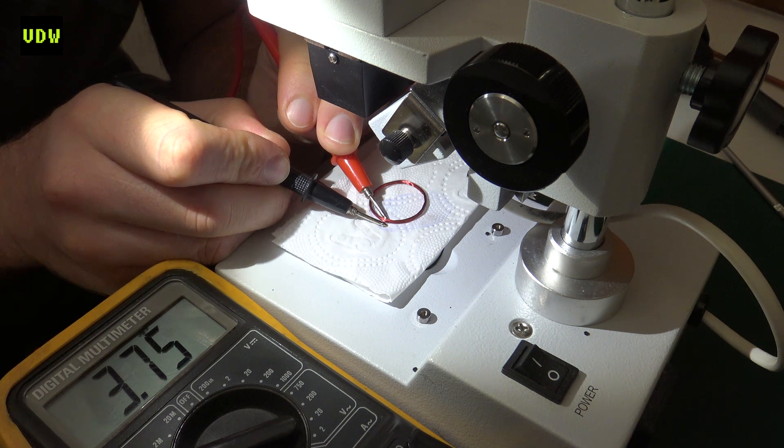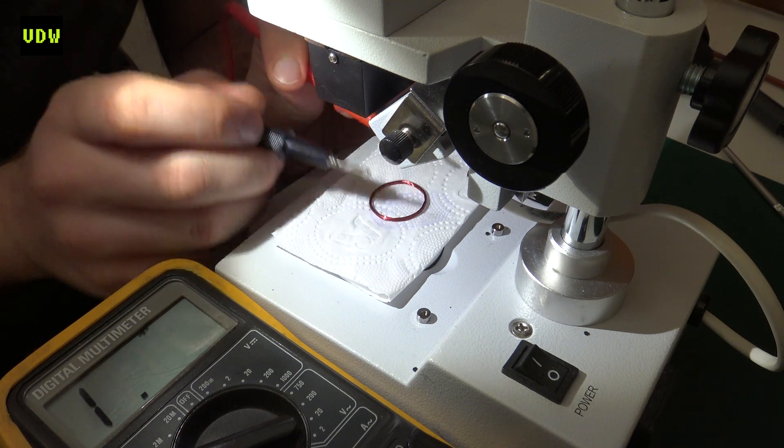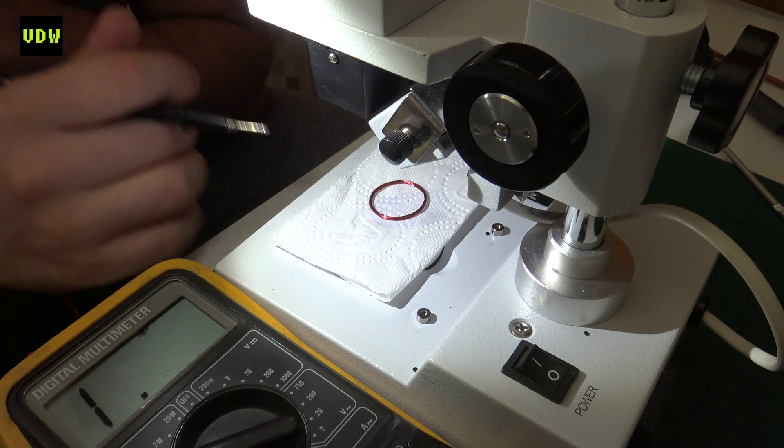And there we go, 3.7 kilo-ohms, right in the range that we want to be. So we have a successful coil.